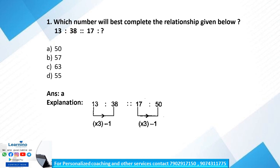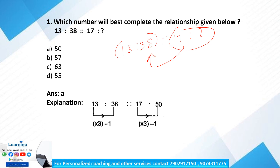Question number one: which number will best complete the relationship given below? We have 13 and 38, so there is a relationship between 13 and 38. The next number is 17, and we have to find the fourth number so that it follows the same relationship as 13 and 38.